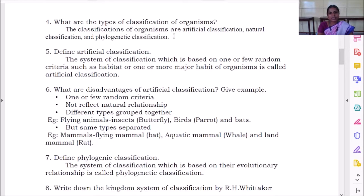What are the types of classification of organisms? We have three types. One is artificial classification, second one is natural classification, third one is phylogenetic classification.